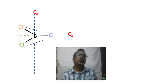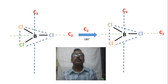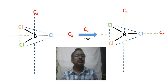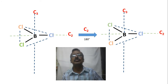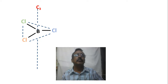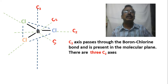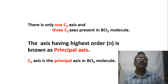The axis passes through the B-Cl bond, and when the molecule is rotated through 180 degrees about the C2 axis that passes through a B-Cl bond, we find that the position of the chlorine atom on that C2 axis is not disturbed while the other two chlorine atoms are interchanged. We have three boron-chlorine bonds and so three C2 axes. In total, BCl₃ has three C2 axes present in the molecular plane along the boron-chlorine bonds, and one C3 axis.